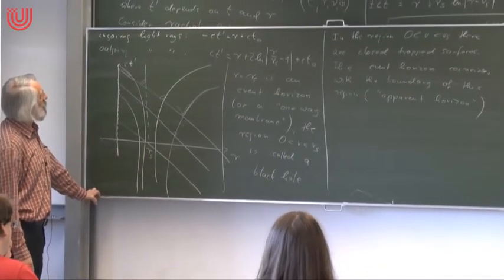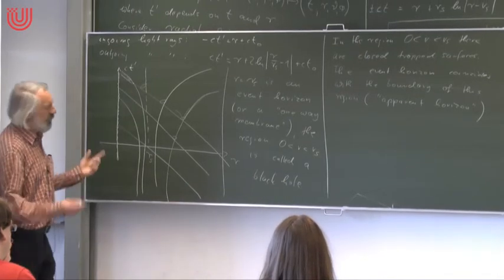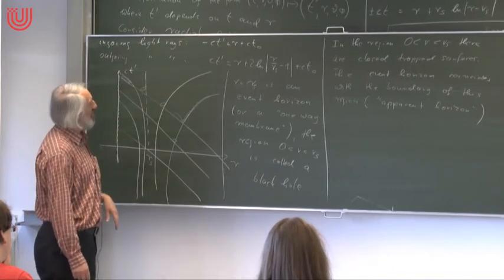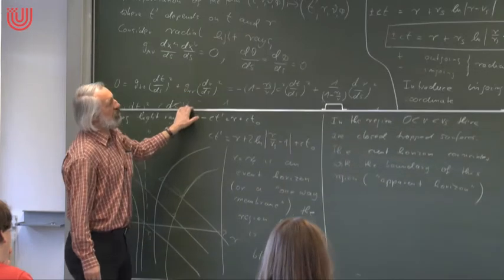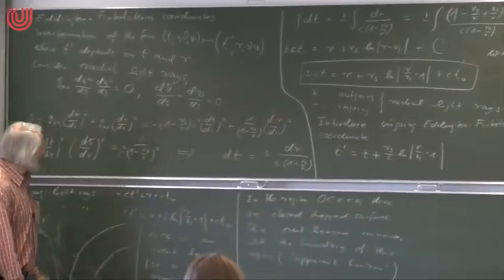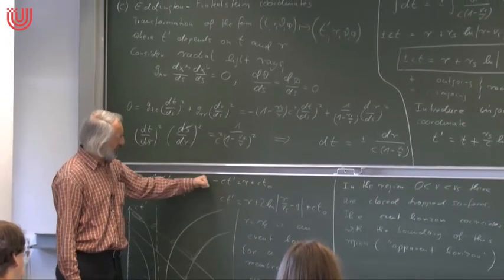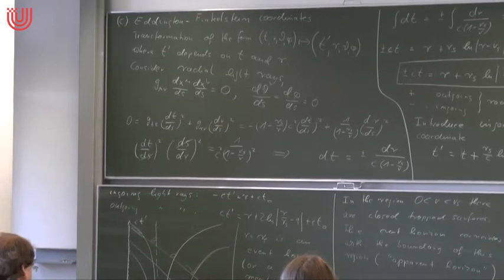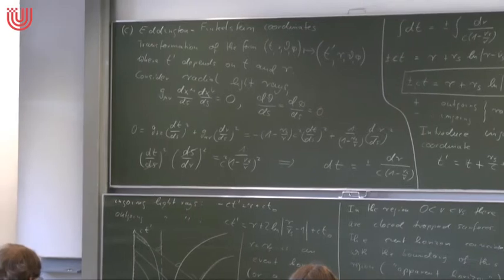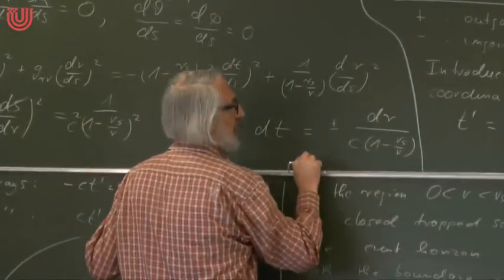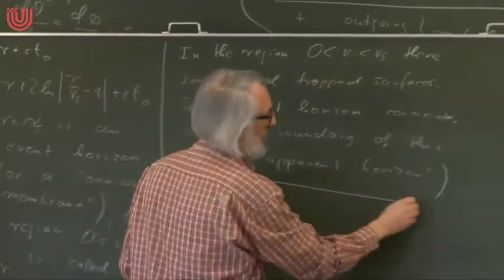You can also do the construction with outgoing Eddington-Finkelstein coordinates — using the opposite sign. Then the outgoing light rays become straight lines and the ingoing ones diverge, giving the time-reversed picture. The light cone at the horizon now points outward, meaning signals can only go from inside to outside — not from outside to inside. This is called the Schwarzschild white hole.